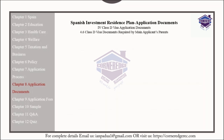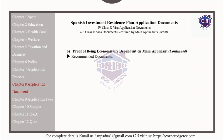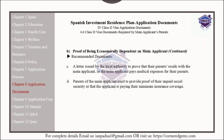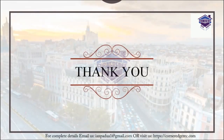Additional recommended documents for the parents of the main applicant include a letter issued by the local authorities to prove that the parents reside with the main applicant, or that the main applicant pays medical expenses for their parents' living expenses. Parents of the main applicant also need to provide proof of unpaid social security or that the applicant is paying their minimum insurance coverage. Thank you for listening.